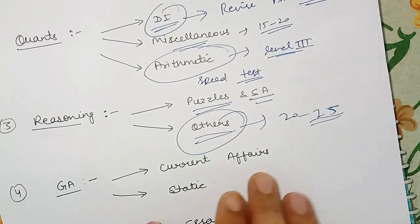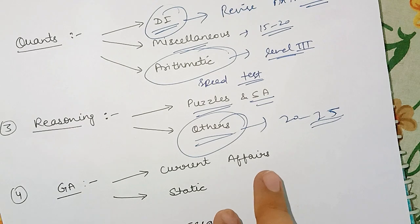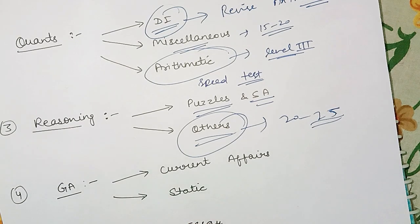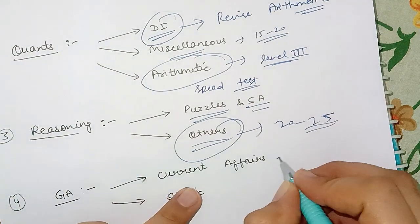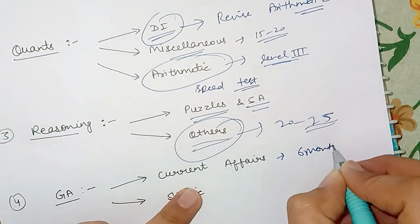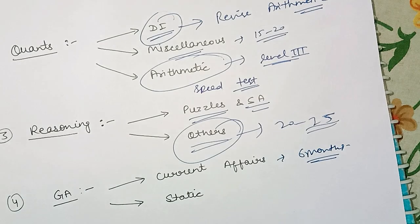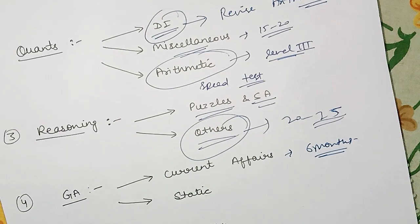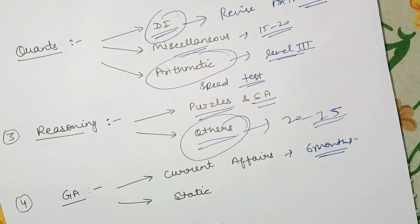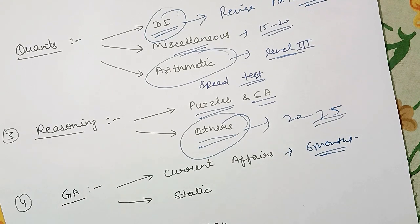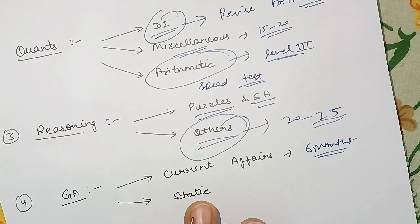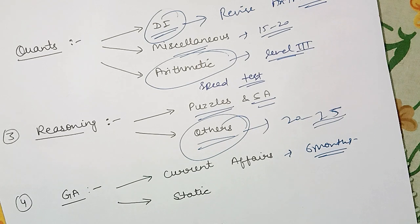Then the most important thing is General Awareness. In this section there are current affairs and static GK. For current affairs at this time I would suggest you to do the monthly PDFs for six months. For last six months you can use the monthly PDFs and they are providing question answer format or you can use the pocket PDFs. For current affairs at this time this is it. Then for static you should revise the static before the mains examination. Try to cover a little portion every day and by mains you will cover all the topics.